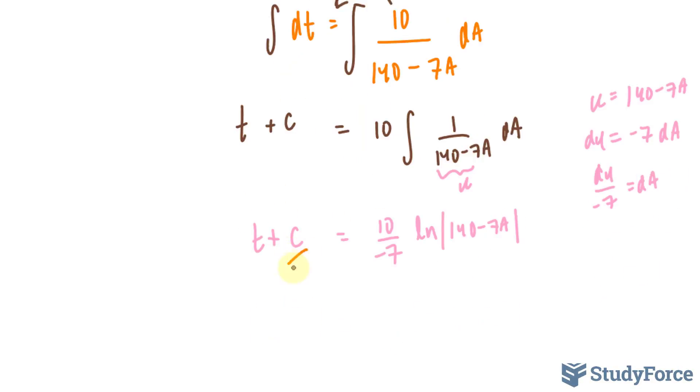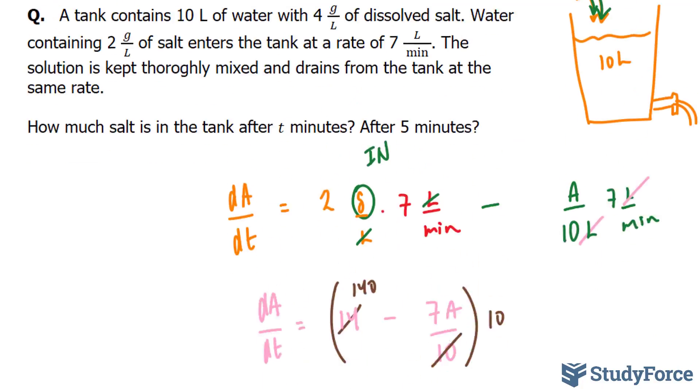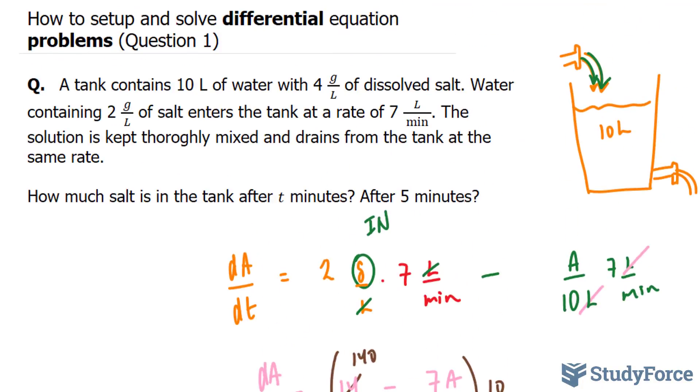Next, what we have to do is find out what our constant is. And to find out our constant, you have to keep in mind one very important thing that was not stated here. At time is equal to 0, we have 40 grams of salt in this tank. How do I know that?